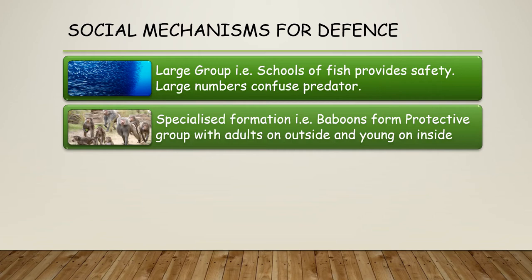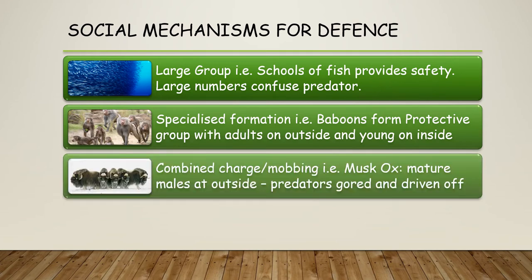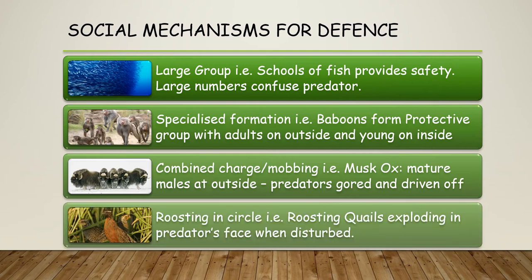There are also specialised formations — baboons form protective groups with adults on the outside and the young on the inside. Coordinated attacks such as charging or mobbing also occur, with musk ox having mature males on the outside driving at predators to gore and drive them off. Birds nesting on the ground will use a coordinated explosive takeoff to scare off and confuse predators.